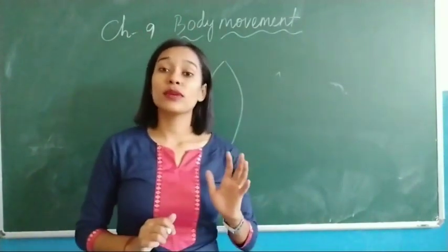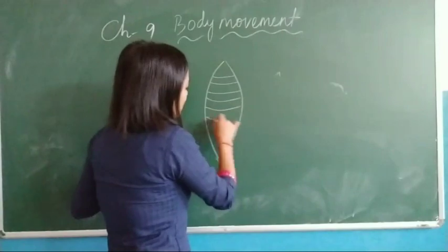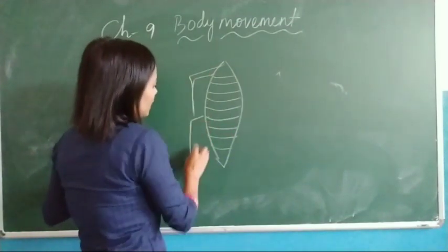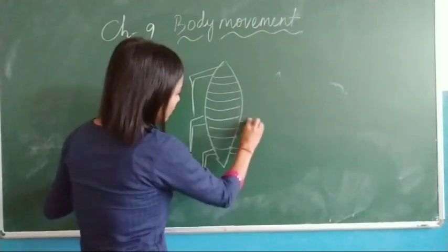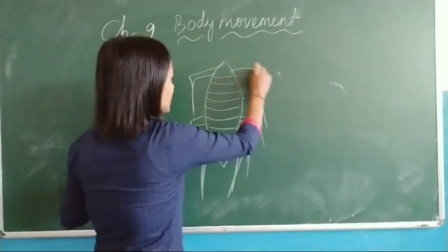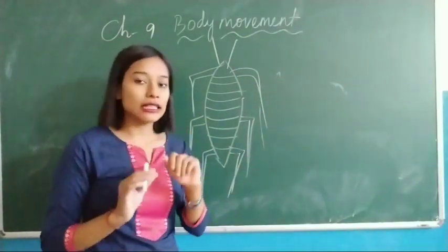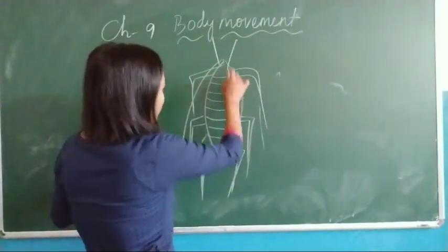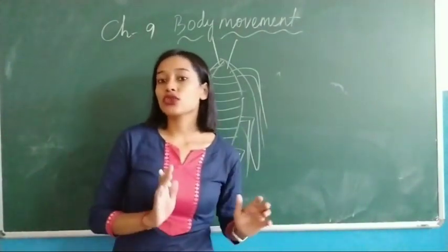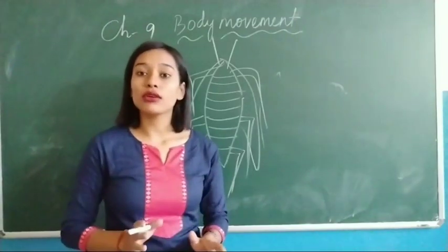Now we will discuss movement in cockroaches. The body of a cockroach is made up of cuticles, which are very hard layers. They have three pairs of legs which help them to walk or run. They have two pairs of antennae — with the help of these antennae they get smell signals. They have one pair of wings with the help of which they fly, although cockroaches can fly only up to a very short distance. So cockroaches can walk, crawl, and fly.